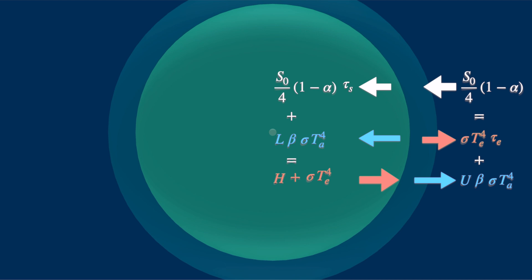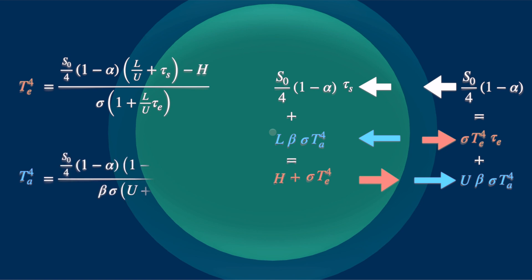That gives us two equations for two unknowns. If you solve it for T underscore E, then you will get this very simple but complicated looking expression. And similarly, solving it for T underscore A will produce a very similar result.